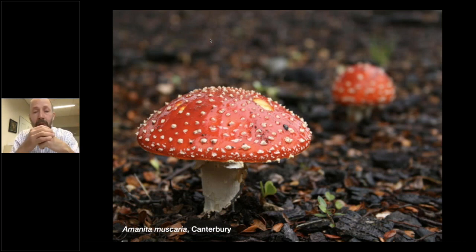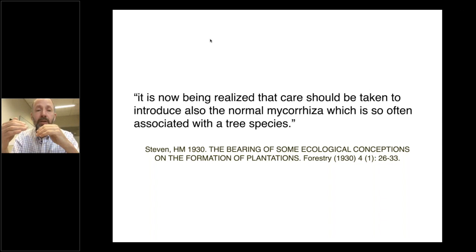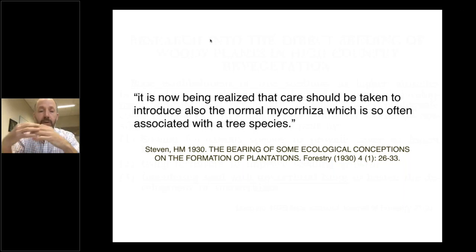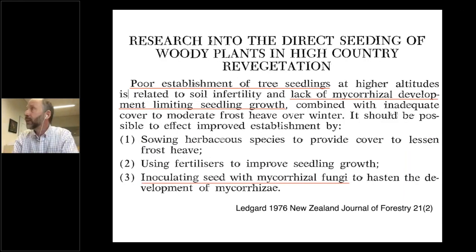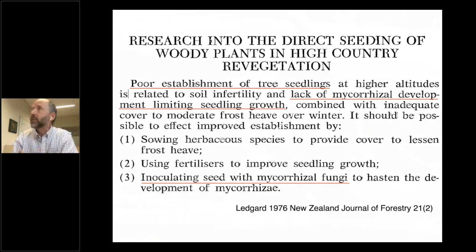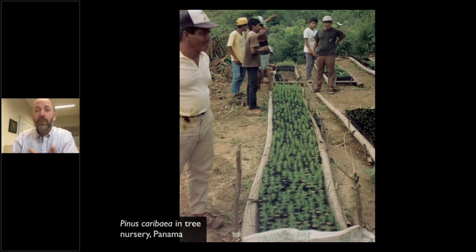As early as 1930, people were saying it is now being realized that care should be taken to introduce mycorrhizae which are associated with the tree species. That was equally true in New Zealand all the way through the 1970s and 80s — papers said that poor establishment of trees is due to a lack of mycorrhizal development, and that we should inoculate seed with mycorrhizal fungi in order to get pines to grow. Very deliberate efforts were made to take soil and fungi from established populations of pine and introduce them into the nursery. With that technology, it became possible to grow pines that are uniformly healthy and well established — and from a forestry perspective, that development led to the New Zealand forestry industry becoming one of the top three industries in the country, all because of recognizing the role of fungi.